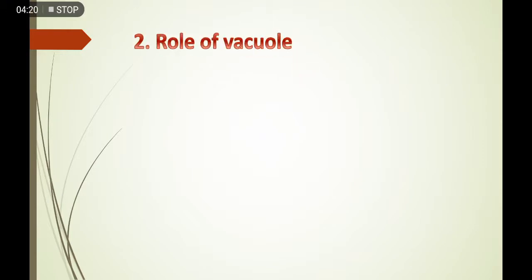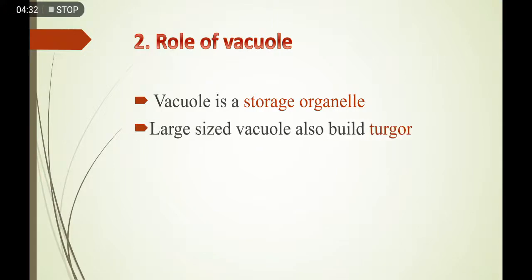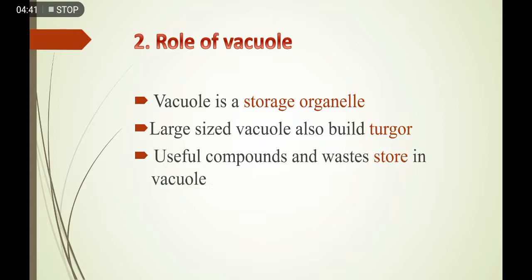The second process that plants use for excretion is the role of the vacuole. Vacuole is a storage sub-cellular organelle that has a function of storage. Because plants have a large-size vacuole, this large vacuole is helpful in building the turgor pressure in plant cells.